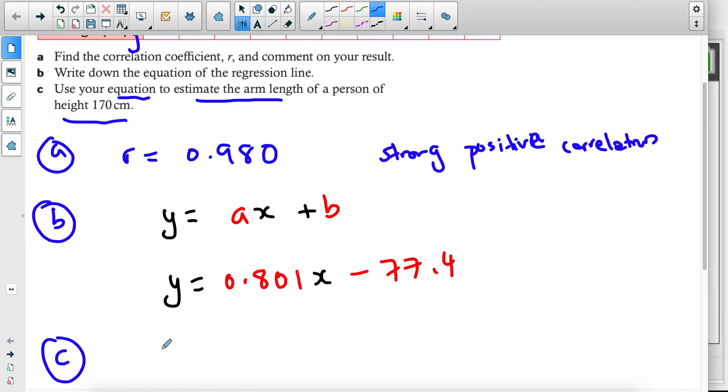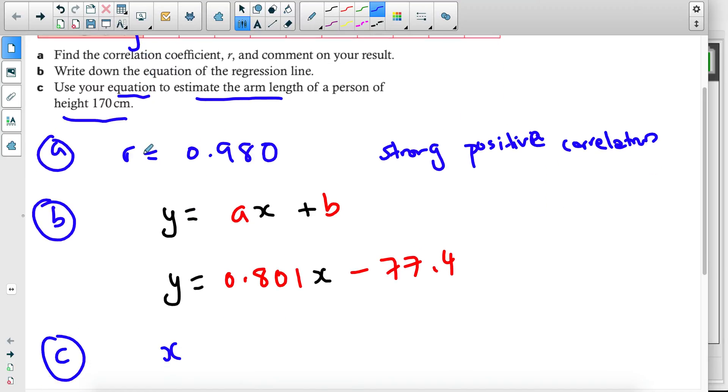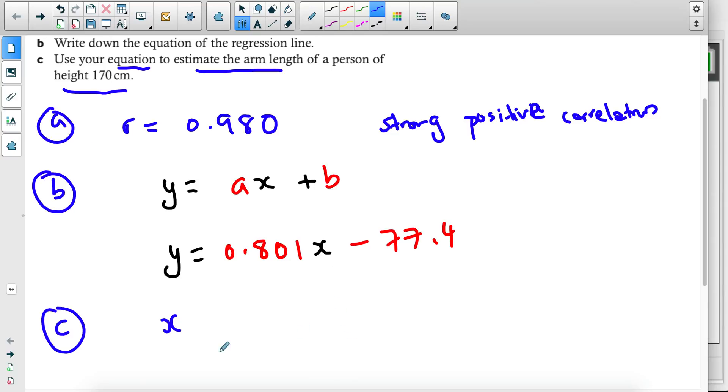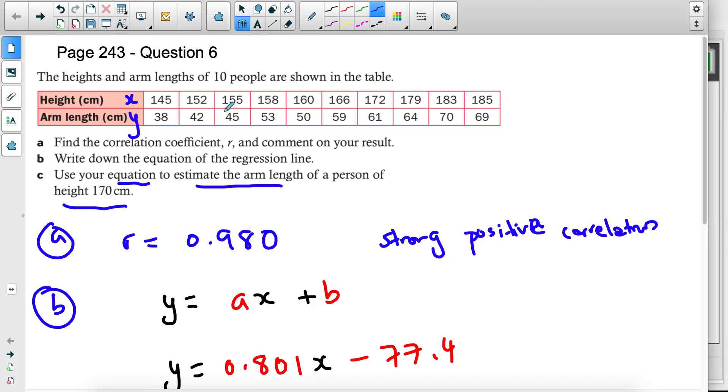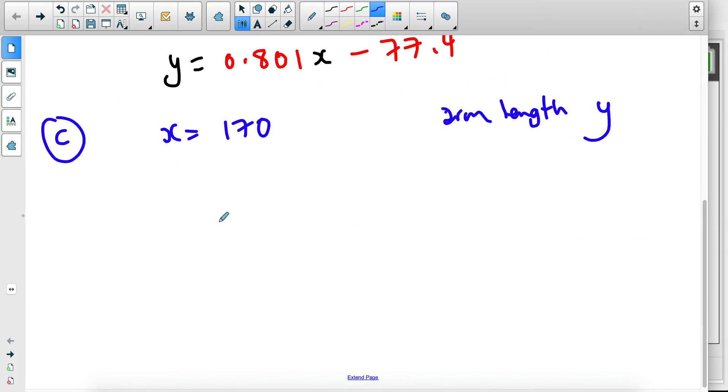So the height of the person is represented by x. Remember, we said that at the beginning, the height is represented by x. So if the height of the person is 170, so if x is 170, we need to find the arm length, which is y, as we specified here. So if x is equal to 170, can I find y?